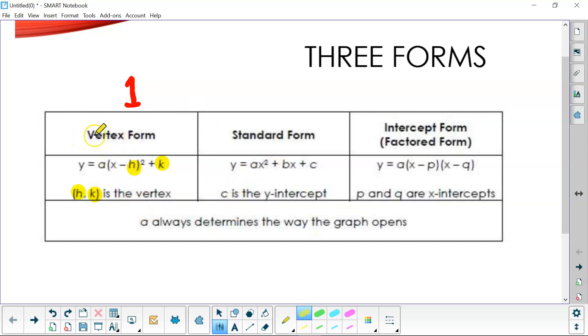The nice thing about vertex form is you can see the vertex right there. It's (h, k), where h is your x value, k is your y value.